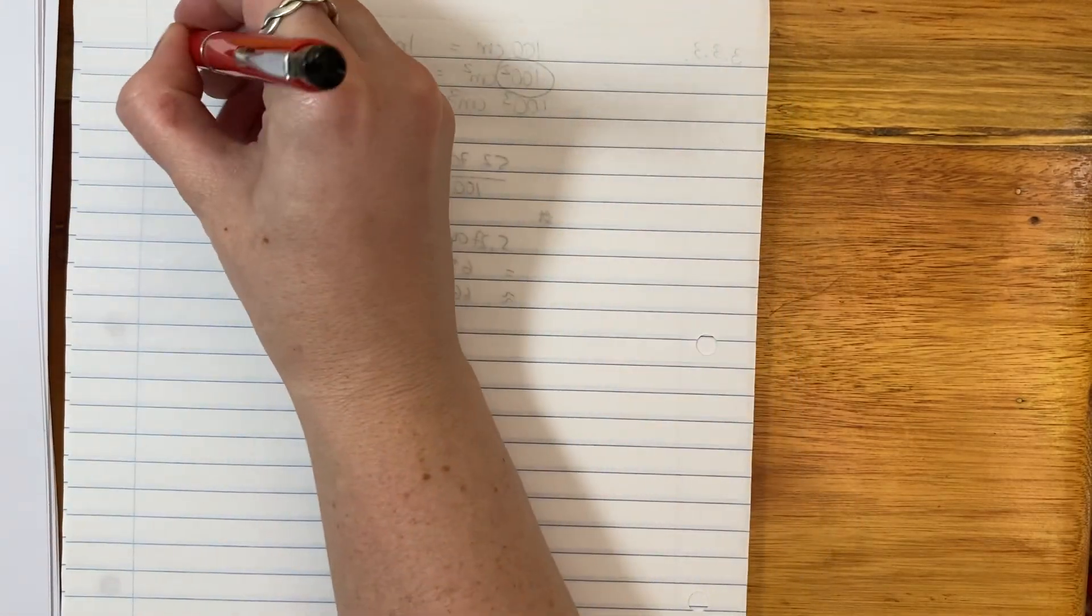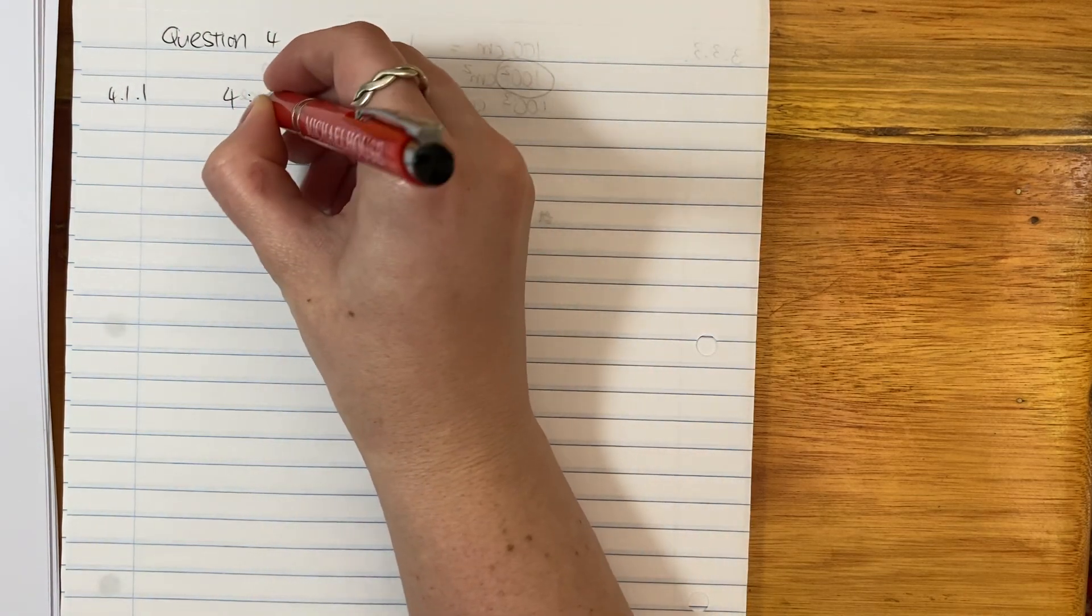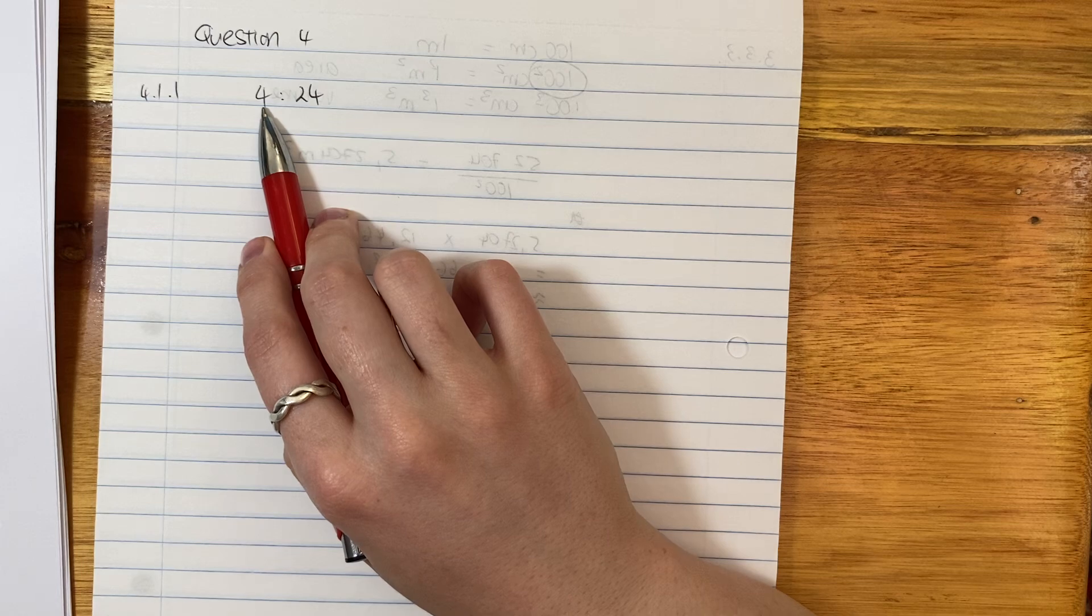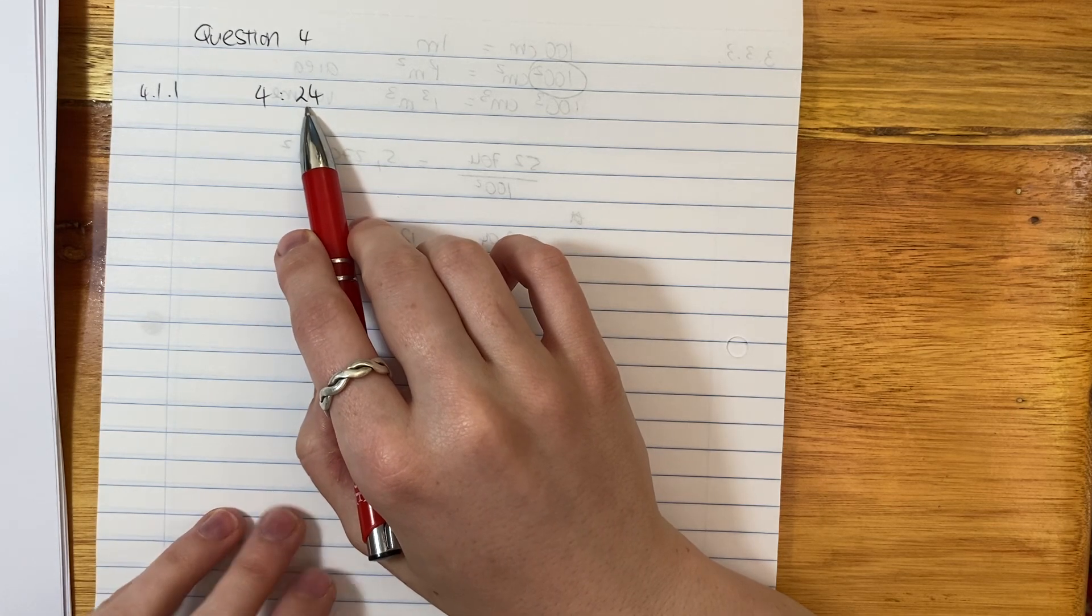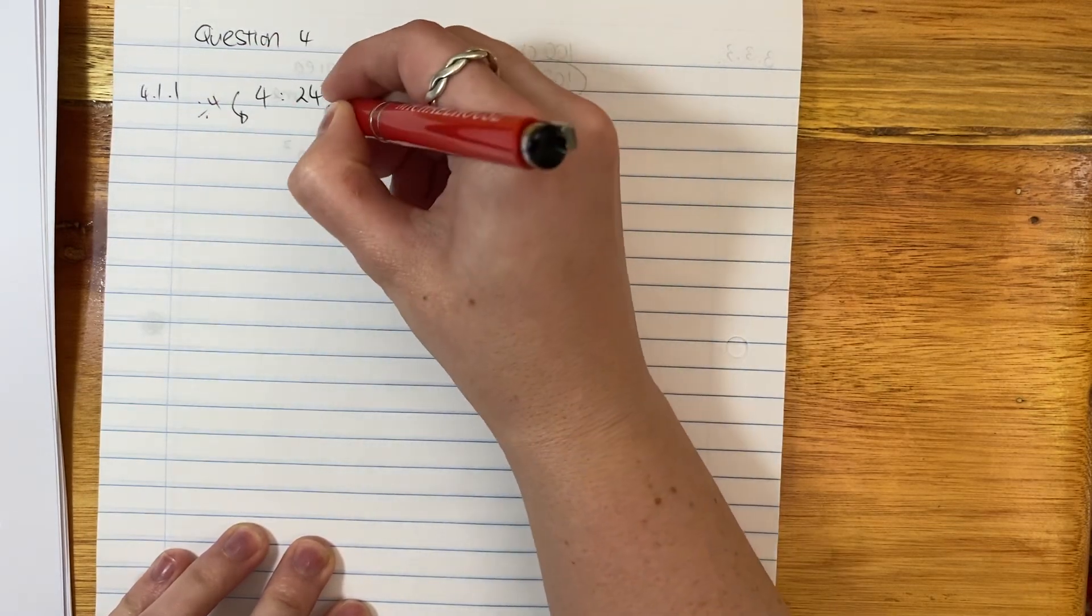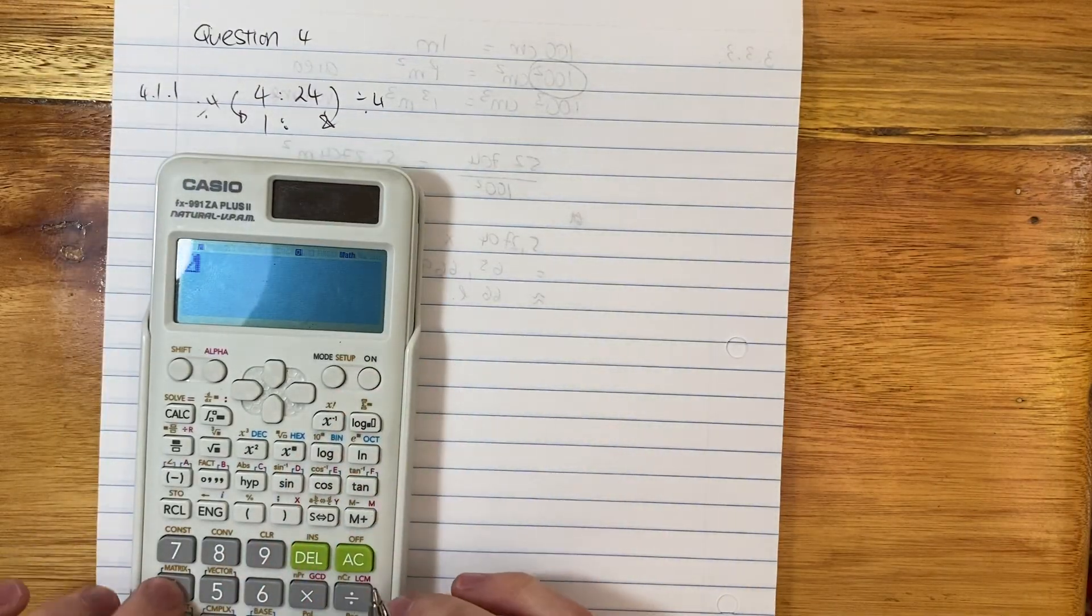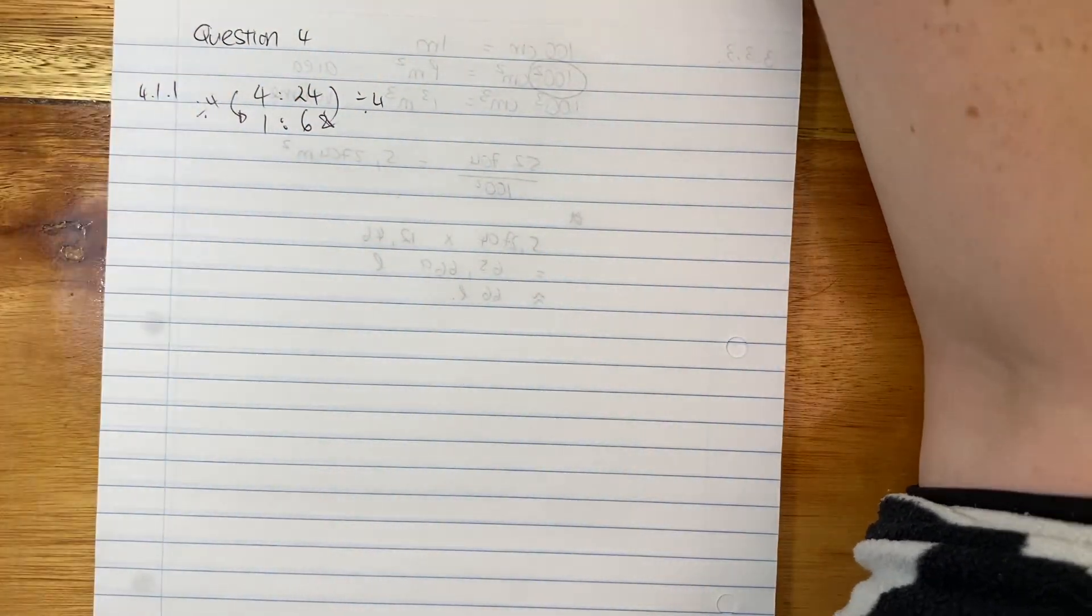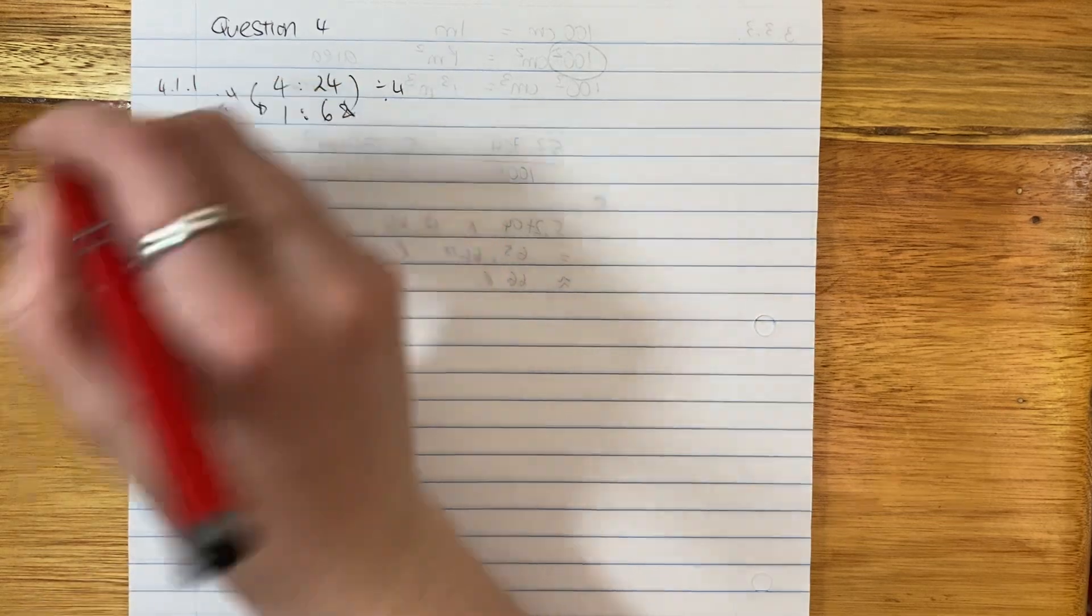Question 4, 4.1.1. We have 4 to 24. In simplified form, you generally want to make this side equal 1. Thankfully, both sides are divisible by 4. So I'm going to divide this side by 4, divide this side by 4, and it becomes 1 to 6. That is our answer done. The biggest thing is just learning how to access information and put it together.